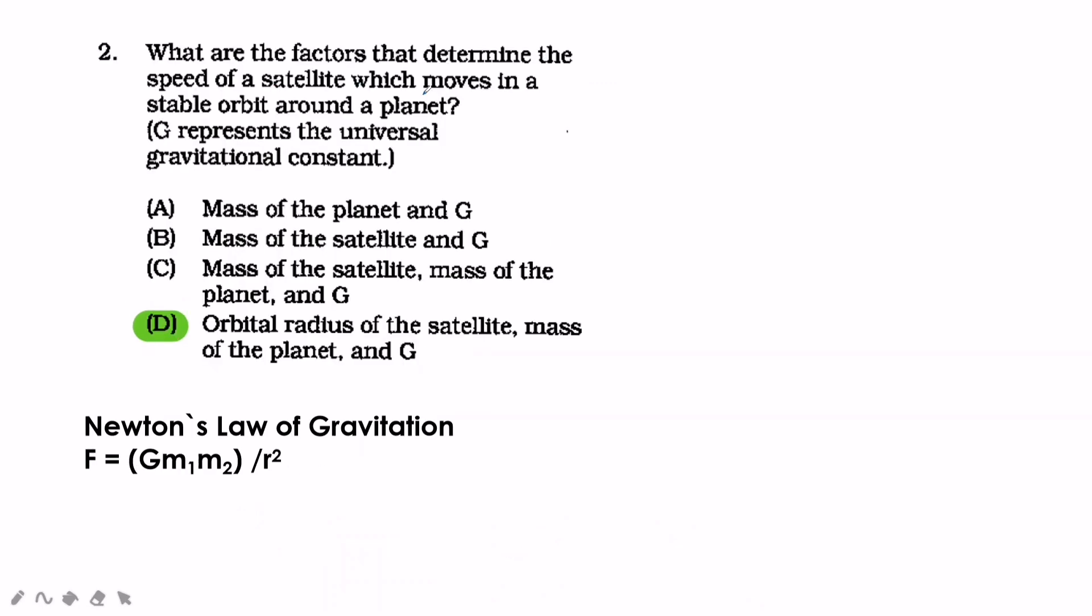What are the factors that determine the speed of satellite which moves in a stable orbit around a planet? G represents the universal gravitational constant. Masasagot nyo ito kung alam nyo yung law of gravitation na force is equal to gravitational constant times mass of object 1, mass of object 2 over r squared radius. Kahit hindi mo sya kabisado, i-imagine mo na lang kung ano yung nagmamatter sa speed, or kung ano yung factor na makakaapekto sa speed. Kung pagpaikot yung lugar, syempre orbit yan. So hindi pwedeng hindi kasama yung radius. Laging tatandaan na pagpaikot, may factor yung radius.